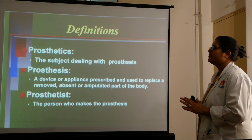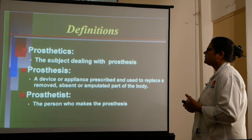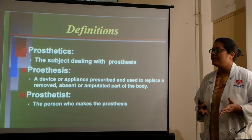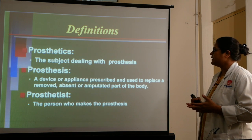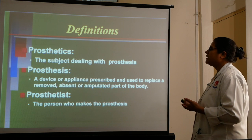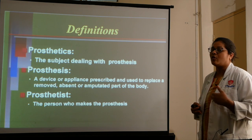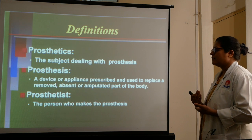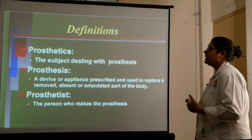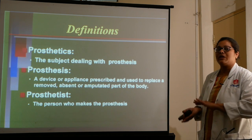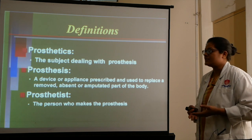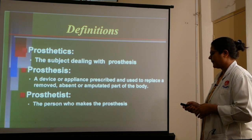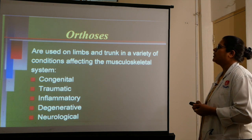Prosthetics and orthotics are dealt together in the field of rehabilitation. Prosthetics is the subject dealing with prosthesis. Prosthesis is a device or appliance prescribed and used to replace a removed, absent, or amputated part of the body. For example, if a person met with an accident and amputation happened — of hand, below knee, above knee, or below hip — we provide a suitable prosthetic. A prosthetist is a person who makes the prosthesis, basically the artificial limbs.